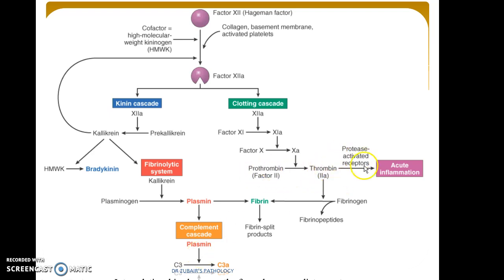Thrombin, acting through protease-activated receptors, causes acute inflammation. The Hageman factor is a very common link between the kinin cascade, clotting cascade, fibrinolytic system, and complement cascade. They are all linked with one another and cause various effects of inflammation.